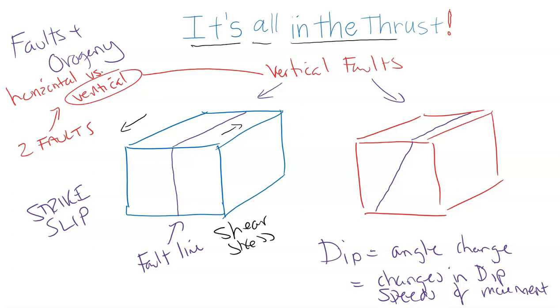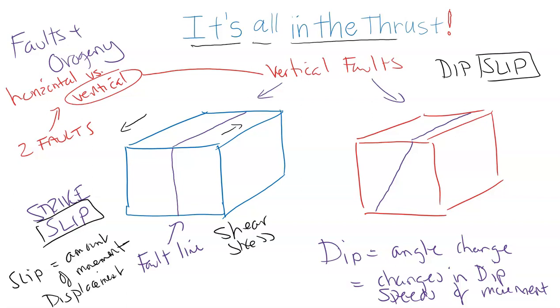Whereas the fault that has the diagonal fault line is called a dip-slip. There's commonalities—slip and slip here. Slip is the amount of movement for each kind of fault, the amount of displacement—how far does one side move in relation to the other? Dip refers to the angle. We have the foot wall over here and the hanging wall.